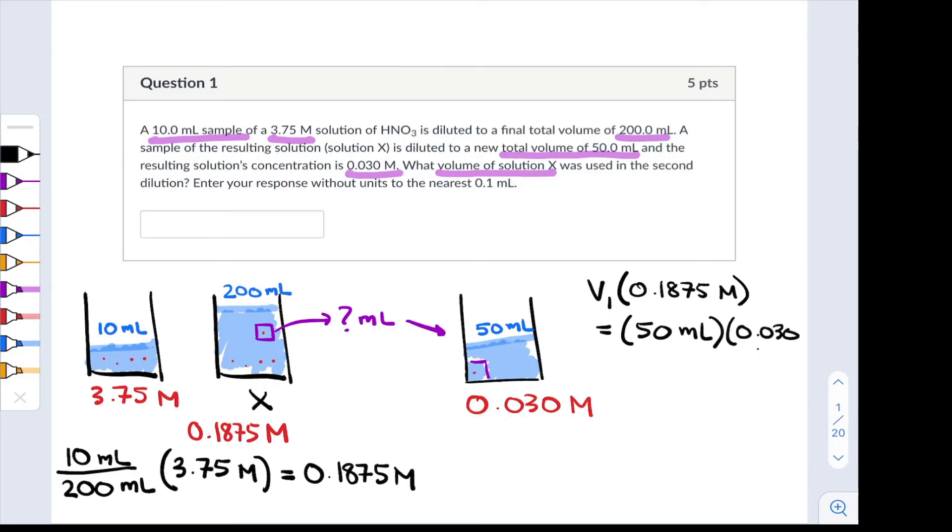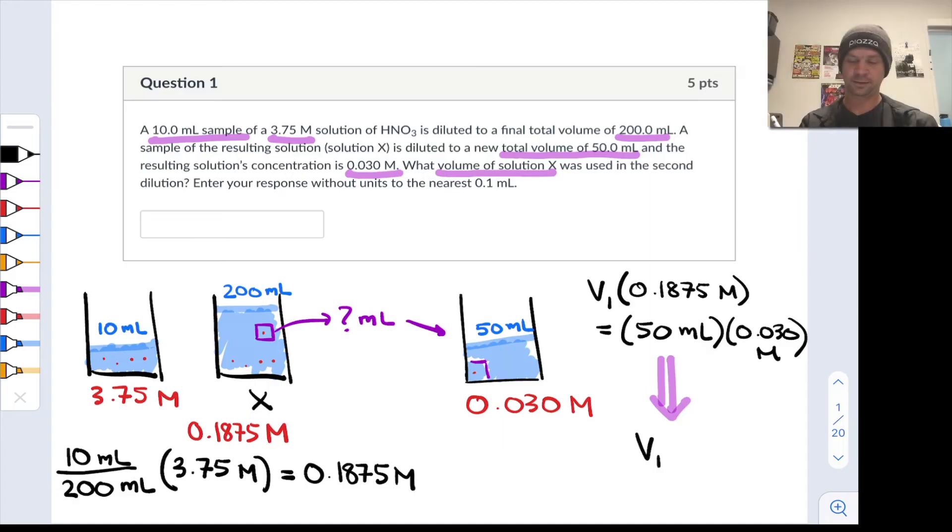Since this too is the number of moles of nitric acid and it's the same before and after dilution inside this purple box that we took out of solution X to dilute. So from here all we need to do is solve for V1, the volume of stock solution used. When we do this we arrive at a final volume of 8.0 milliliters of stock solution used.